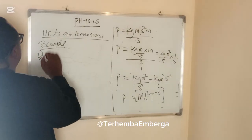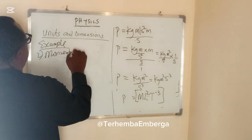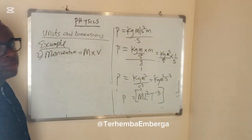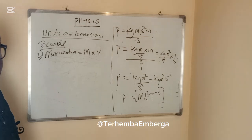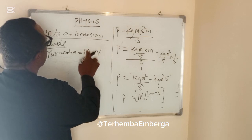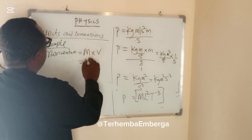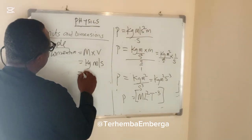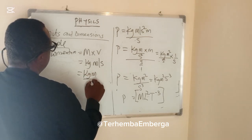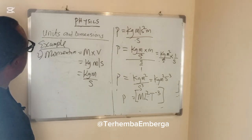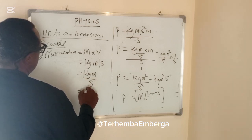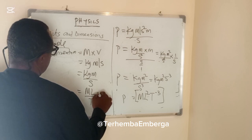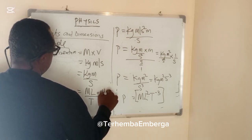Let's also look at this example. What is momentum? Momentum simply means the product of mass and its velocity. We know the unit of mass as kg and the unit of velocity as m per second, which can be written as kg·m over second. So we can write this as M·L over T, which can be written as M·L·T⁻¹.